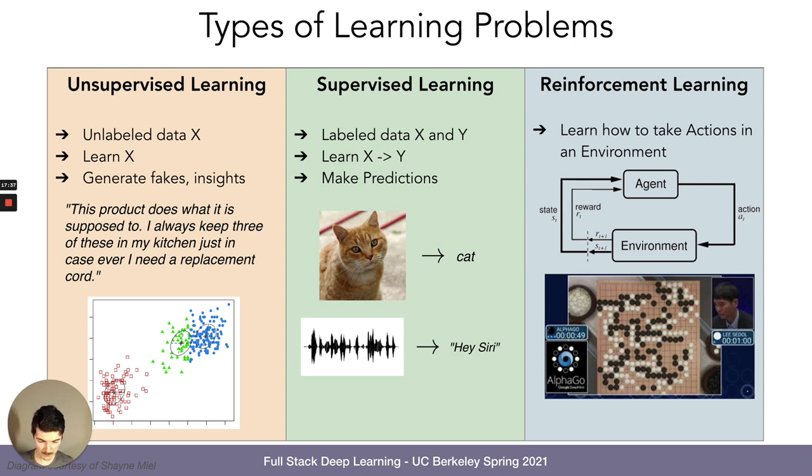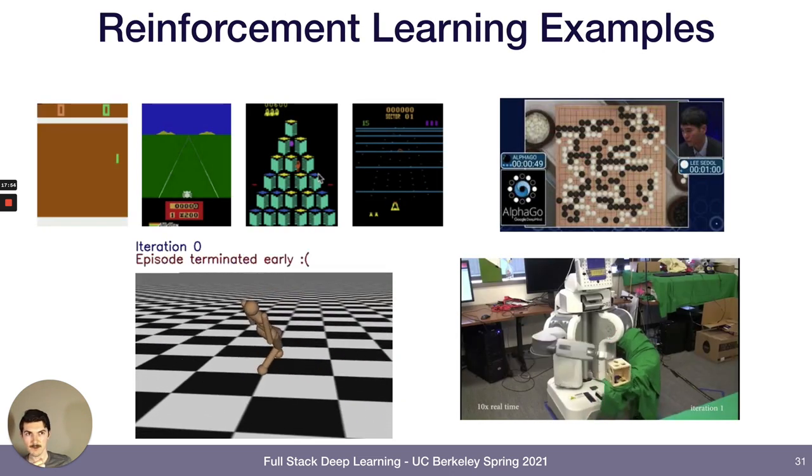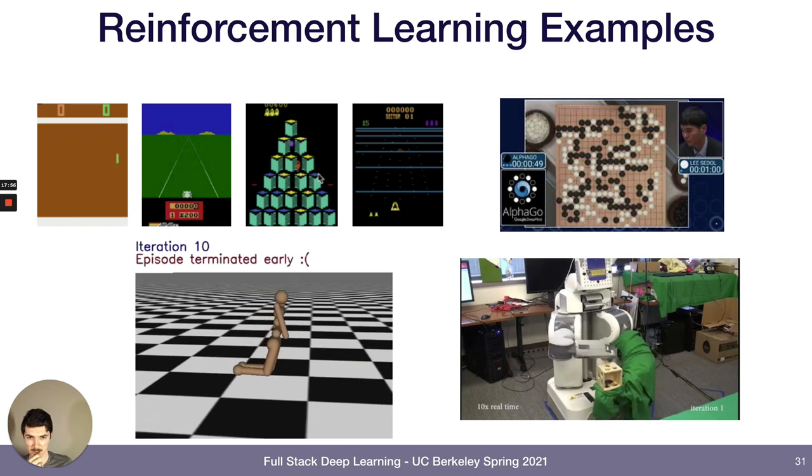And if you go to this person does not exist.com, you'll see an infinite number of GAN generated faces. That is really fun to look at. I also saw this anime does not exist.com today. And in reinforcement learning, you have a lot of examples. I think Josh covered some of them.